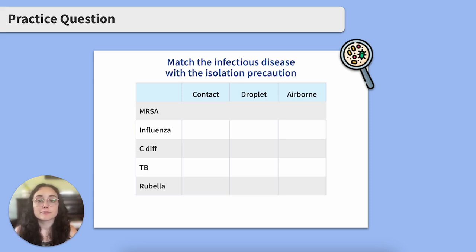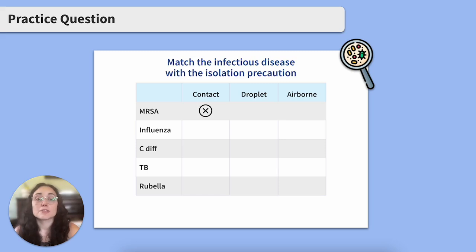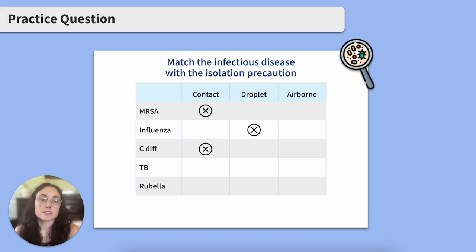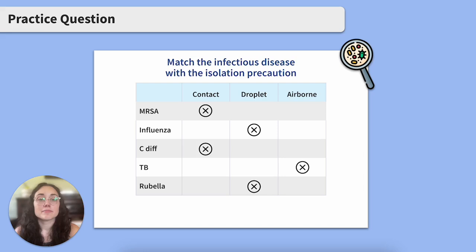Ready for a run-through? Let's go. MRSA? Contact. Influenza? Droplet. C. diff? Contact. TB? This one used to trip me up — it's airborne. And rubella? Droplet. Great work.